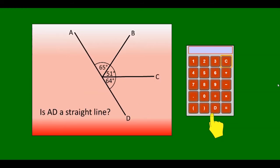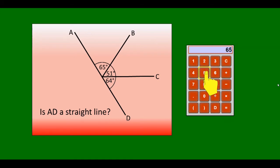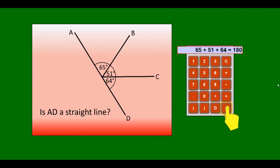This question is asking if AD is a straight line. It looks like a straight line, but it could have just a slight turn in the middle. One way we can check is to verify that the three angles together on this line add up to 180. So I'll start off with 65, add 51, then add 64. Yes, I do get 180, so AD is a straight line.